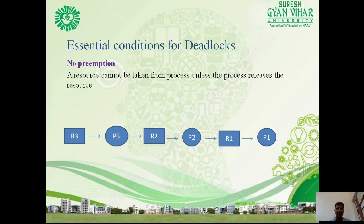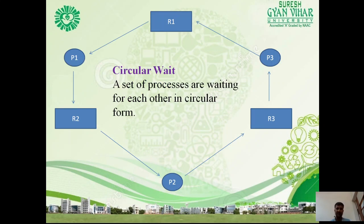The third condition is no preemption — a resource cannot be taken from a process unless the process voluntarily releases it. For example, R3 is available for P3, but P3 requires R2, which is held by P2. P2 requires R1, which is held by P1. No process can be forcefully made to release resources — this is the no preemption condition.